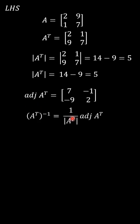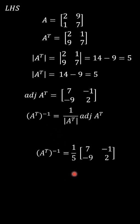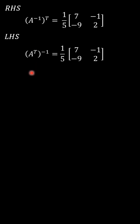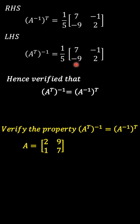Substituting these two values into the inverse formula, we get the inverse of A transpose. Now we have both values — the transpose of A inverse and the inverse of A transpose. The question is to prove these two are equal. From these two values, these two are equal. Hence, it is verified.